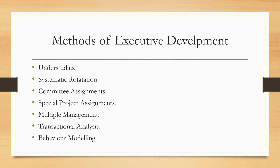The next method is systematic rotation. In this, the trainee is rotated periodically from one job to another, thus acquiring a general background of various jobs and positions. In a planned rotation program, job switches are made in periods of about six months to a year. The aim of this method is to broaden the knowledge, skills, and outlook of the managers. This method is often used with junior managers so they can learn the different aspects of management and how work is conducted in different areas.